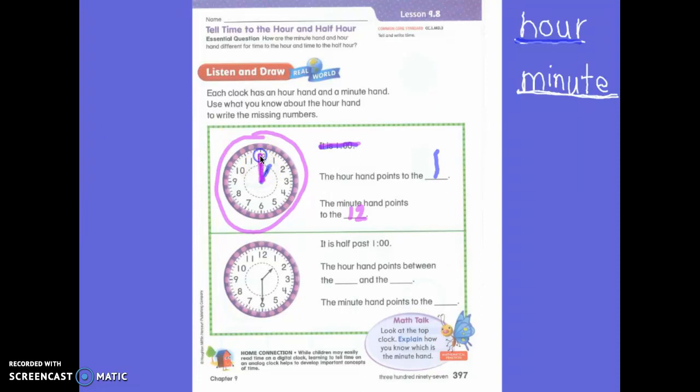What does the minute hand say? O'clock when it points to the twelve. You are exactly right. So which hand am I going to look at first? The hour. You are going to look at the hour hand first, because that tells me what hour it is. Does everyone understand? We go from shortest to longest.